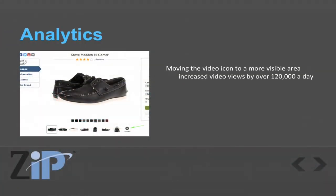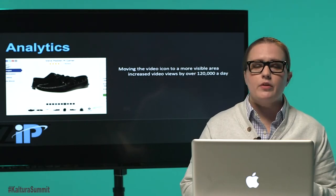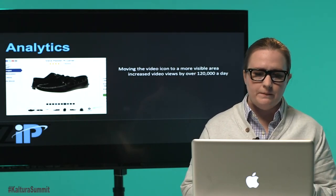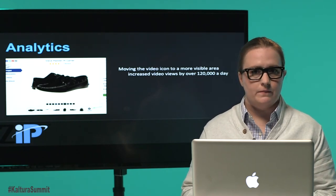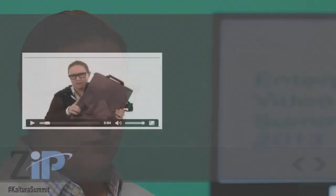Something else to consider is where the video icon placement is on your site. When we initially started, the icon was not easy to find. We went through a lot of user testing and even when we told users there was a video on the page, they would never find it. By moving the video icon above the fold where customers could actually see it, we increased our video views by over 120,000 views a day. That told us customers wanted to see video — we just weren't putting it in front of them.